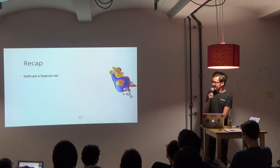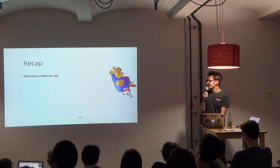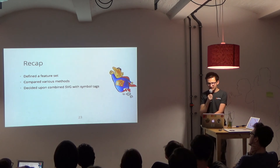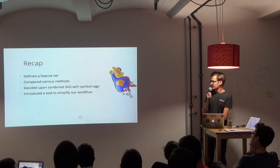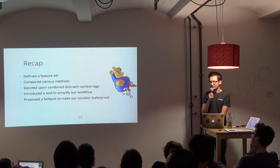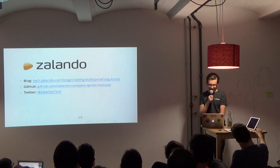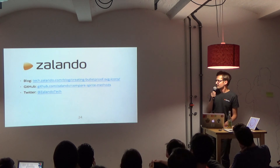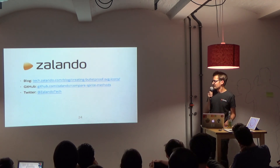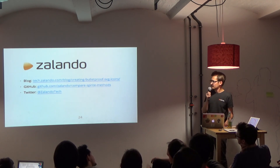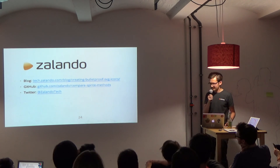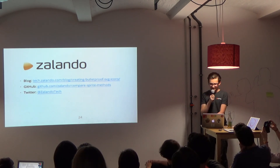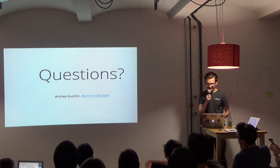Let's do a recap. We defined a feature set that we would like from our spriting method. We compared various spriting methods and decided upon using combined SVG. We introduced a tool to simplify our workflow and proposed a fallback to make our solution bulletproof. I created a blog post on our tech blog that explains how to do this, and I also created a playground with various sprite methods that build different sprite methods out of SVGs. Thank you.